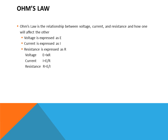Ohm's Law is a way to understand the relationship between voltage, current, and resistance and how they affect each other. Voltage is expressed as the capital letter E, current as the capital letter I, and resistance as the capital letter R. The formulas are: Voltage: E = I × R. Current: I = E ÷ R. Resistance: R = E ÷ I.